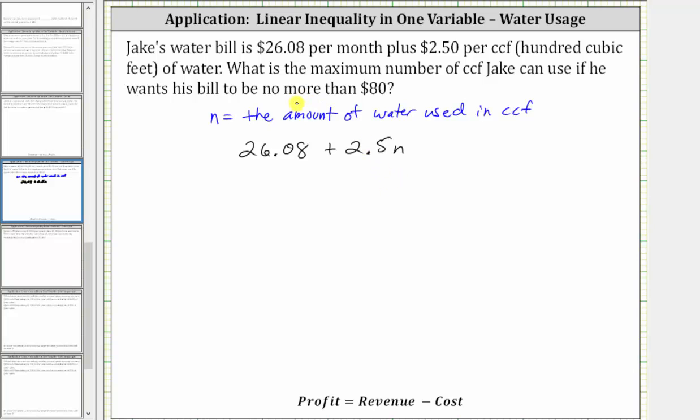Since he wants the amount to be no more than $80, this amount must be less than or equal to 80. Now we need to solve the inequality for N.